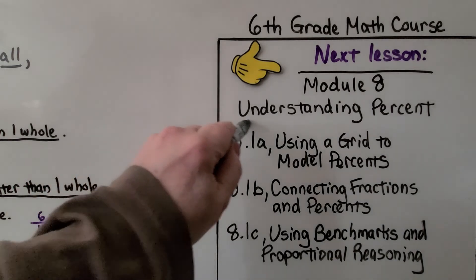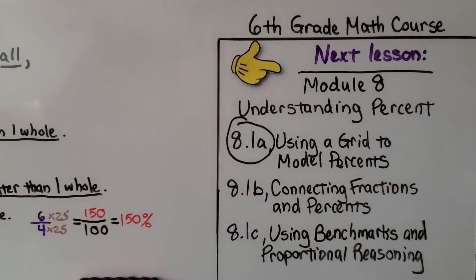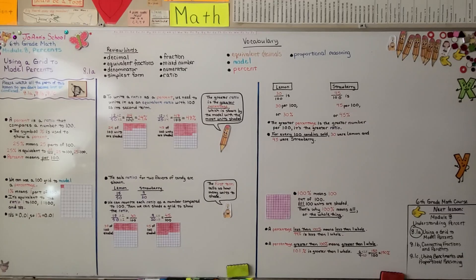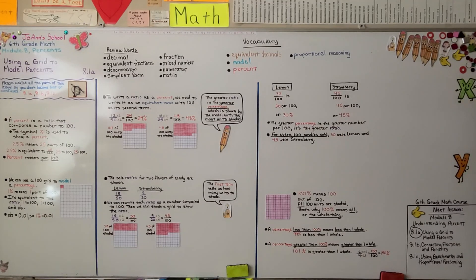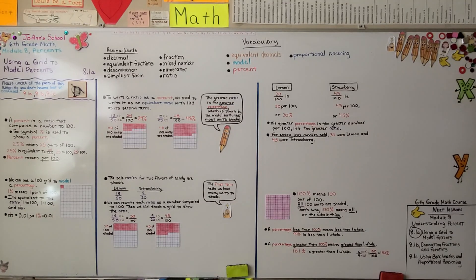So we finished this lesson and we now know how to use a grid to model percents. We're going to move on to the second part, connecting fractions and percents. So just remember, percent means per 100. It means parts of 100. Have a wonderful day, and I'll see you next time.